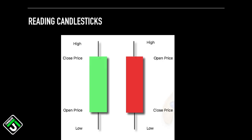As stated before, each candlestick provides us with four pieces of information: the opening price for the time period, the highest price, the lowest price, and the closing price. The boxed area of the candlestick is called the body, and this represents the opening and closing price of the chosen time period. The lines at the top and bottom of the body are called the wicks, and these represent the lowest and highest price of the time period. If we were looking at the one minute time frame, each candle represents one minute of trading — it opens, the price fluctuates making new highs and lows, and then closes at the end of that minute.